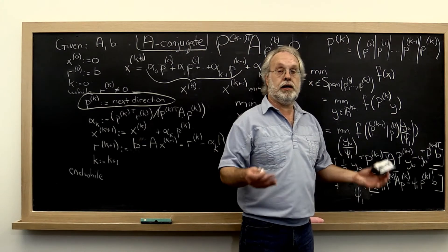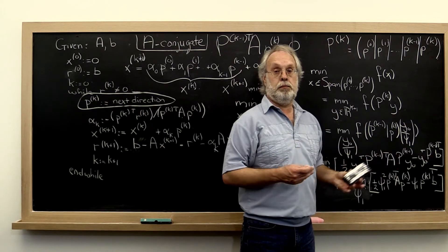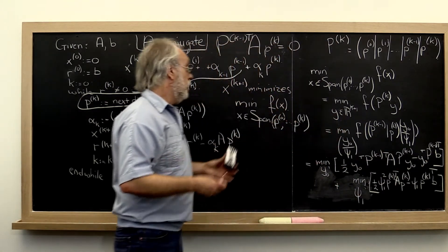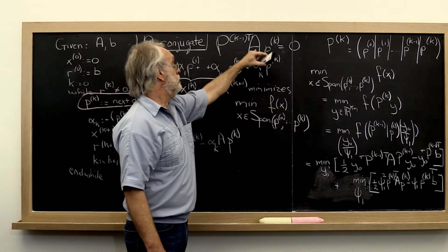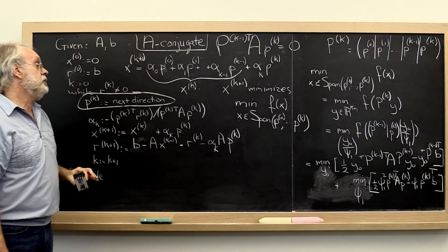Or you can recognize that this whole argument was all about how should we be picking our search directions. And if that is what it's all about, then all we do is say, okay, we're going to pick our search direction to be A-conjugate, and then actually the algorithm simply continues with that.